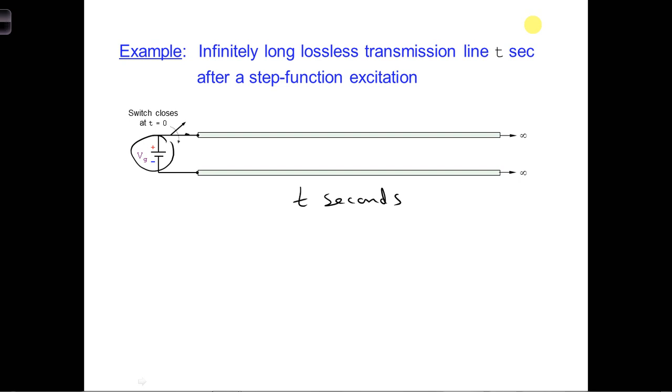We could put our coordinate system anywhere: at the load, we could have Z equals zero at the generator, or somewhere in the middle, or anywhere else.